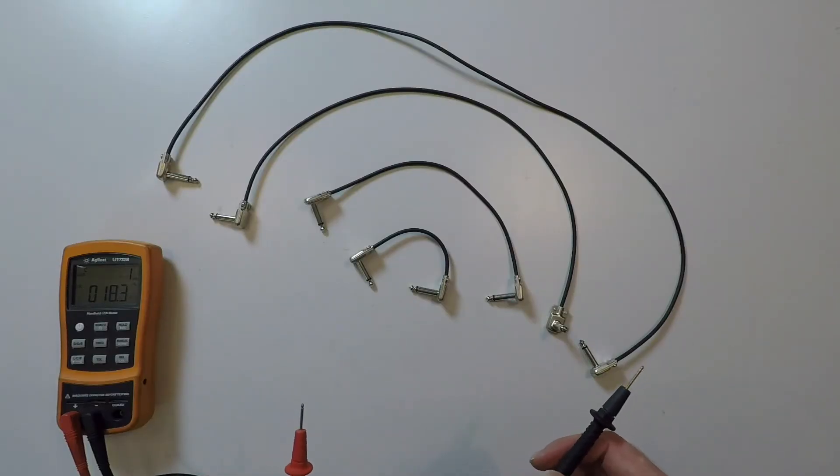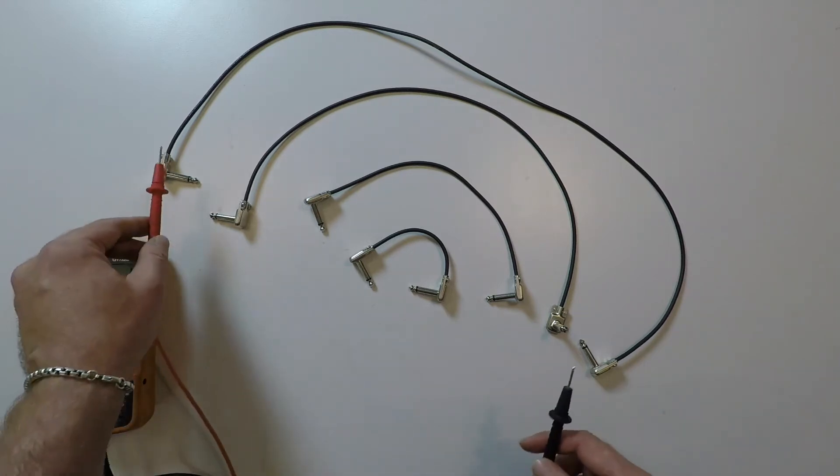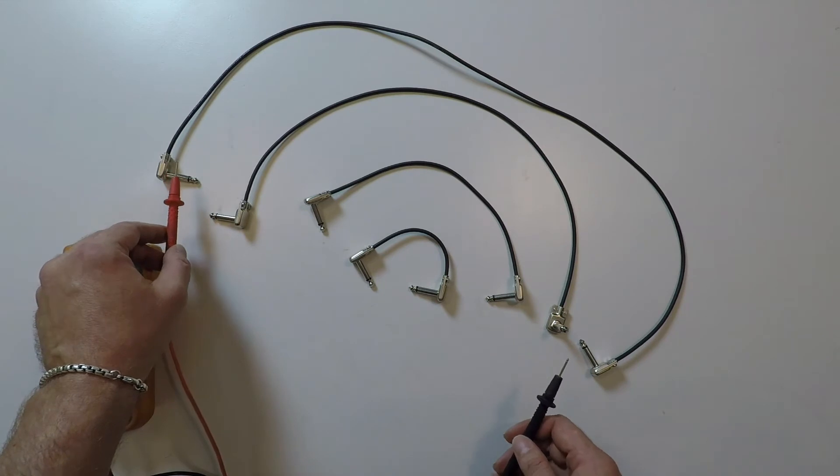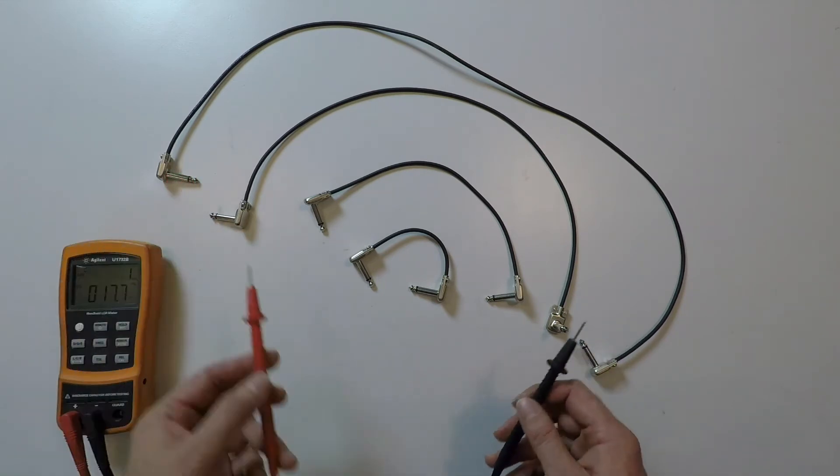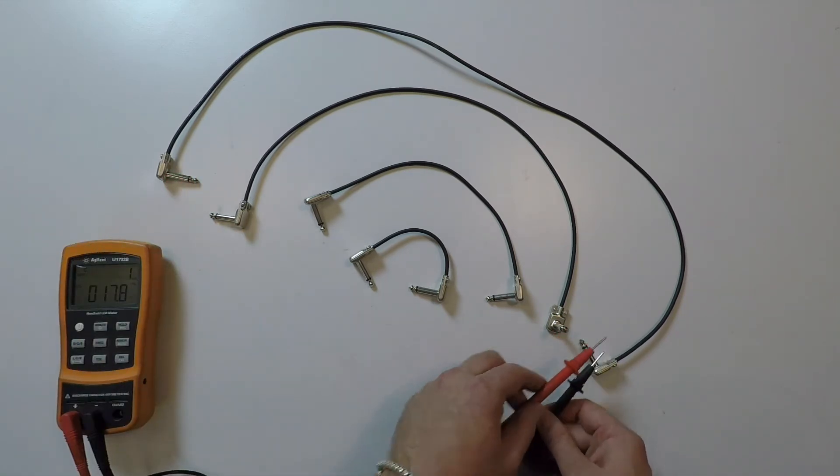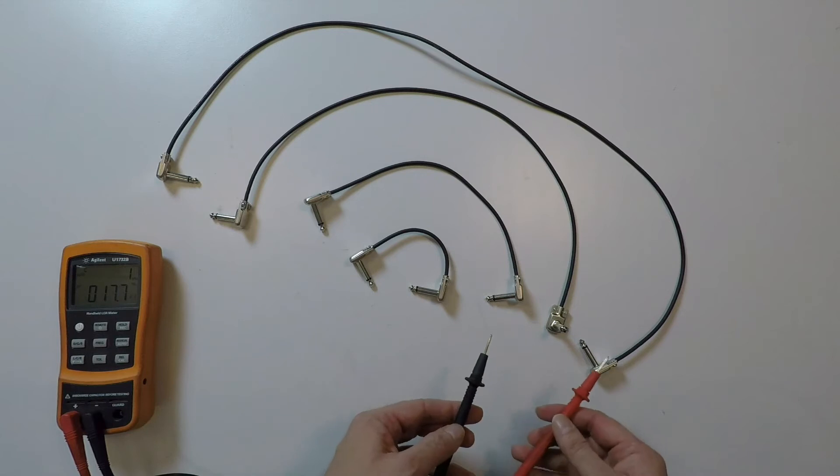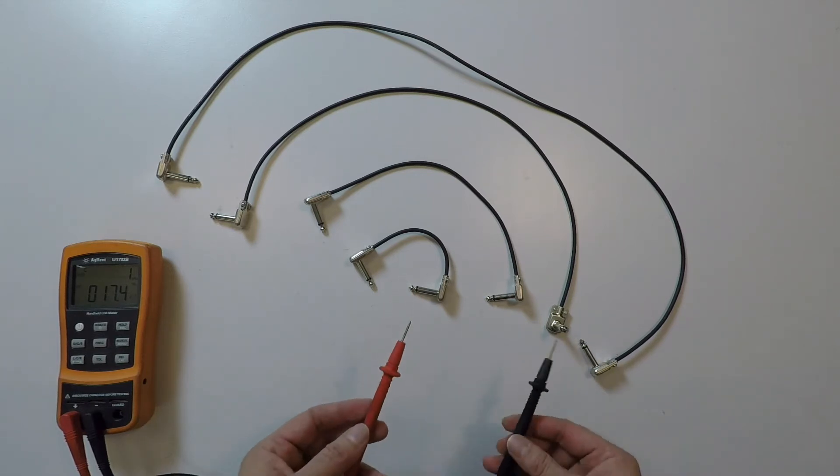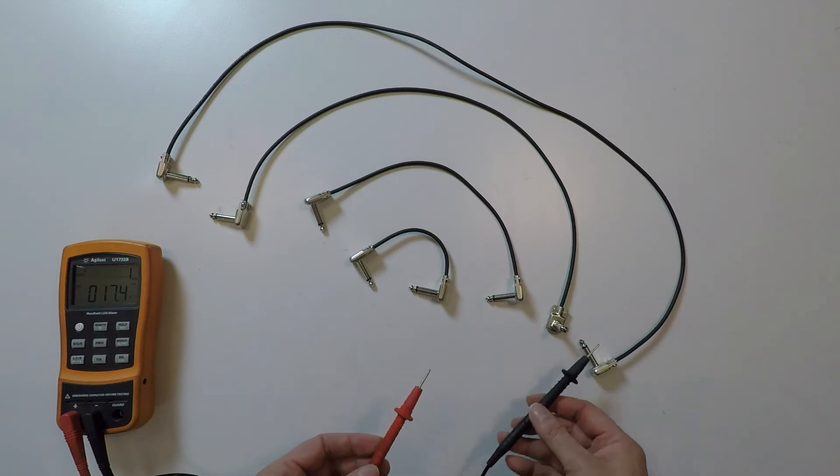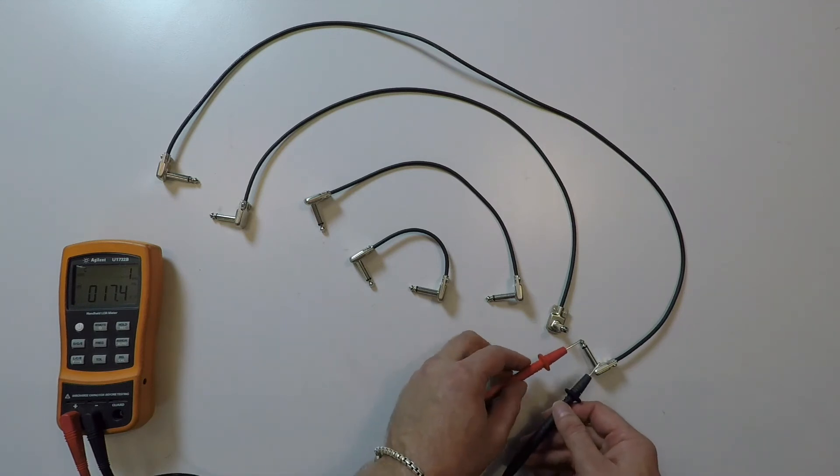Instead of measuring it like you would do with resistance from ground to ground or tip to tip, we will only use one plug to measure it. It really doesn't matter which way these probes are in your hand or in the plug. But, let's say that this black one is ground and this is the tip.